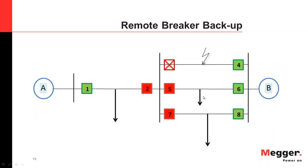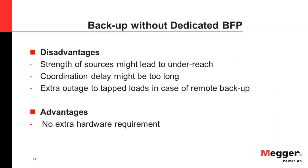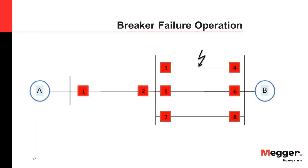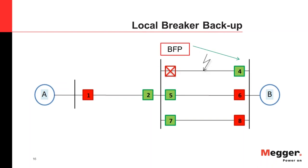The third disadvantage involves tap loads. If you take out Breaker 1, or Breakers 6 or 8, you are causing an outage to all loads connected on those taps, meaning no supply to those consumers. You don't want other loads affected by a fault that happened between Breaker 3 and 4. The only advantage of the remote backup scheme is that it does not require additional hardware equipment.